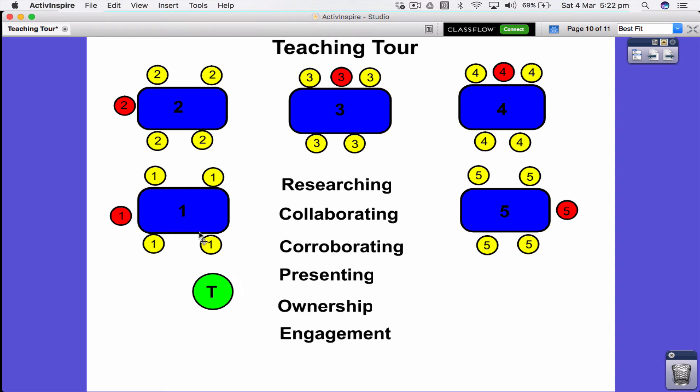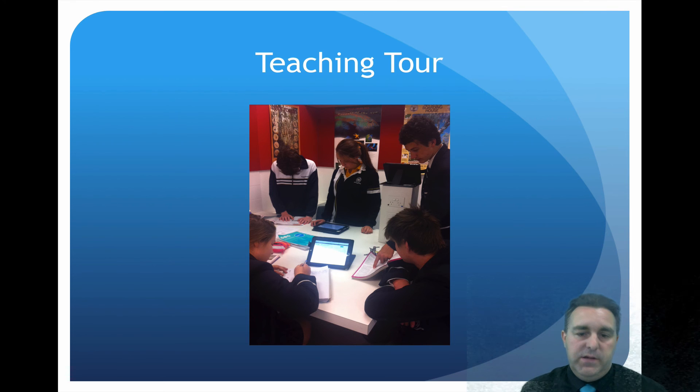They're corroborating to make sure what this person is delivering is the same as what the whole group has researched and understands. They're presenting. Group one person is presenting, but these ones will present when they get back. There's ownership because they're owning the work, and there's engagement. The entire class is working very hard all lesson to get through everything. As a teacher, you're controlling and working on developing what they're doing.